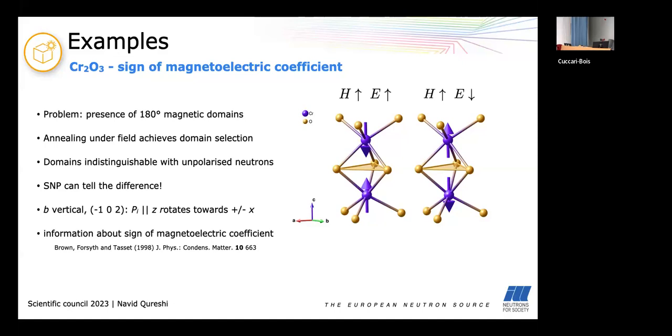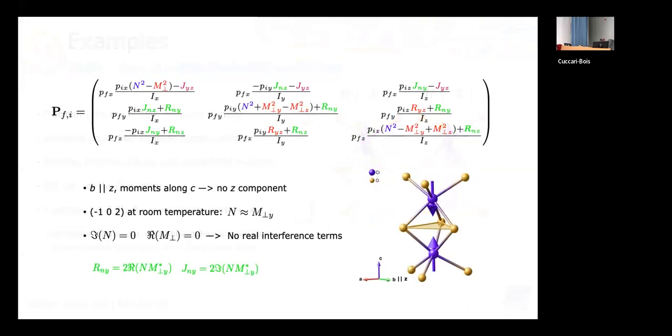But you can with SNP and what Jane Brown, Forsyth and Francis did was to take a single crystal, align it with its b-axis vertical and measure this particular reflection. And they saw that by aligning the initial neutron spin along z it would rotate towards the plus or minus x axis after the scattering depending on the field treatment. So let's break that down. Here we have the polarization matrix with the particular setup they chose. You see that there's no z component of the magnetic moment so all the cross sections where z appears become zero. Then it happens to be that for that reflection the nuclear intensity is similar to the magnetic so you get rid of those differences here.